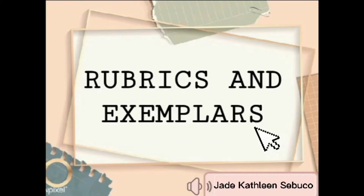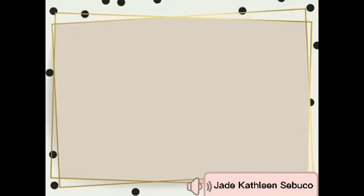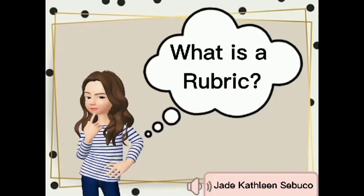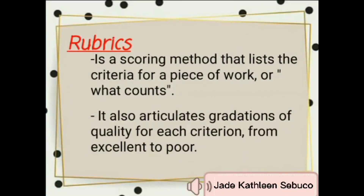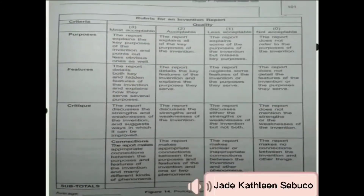Modern assessment methods tend to use rubrics to describe student performance. A rubric is a scoring method that lists the criteria for a piece of work — for example, purpose, organization, details, voice, and mechanics are often what count in a piece of writing. It also articulates gradations of quality for each criterion, from excellent to poor. Perkins et al. (1994) provide an example of rubric scoring for student inventions, listing criteria and gradations of quality for verbal, written, or graphic reports.